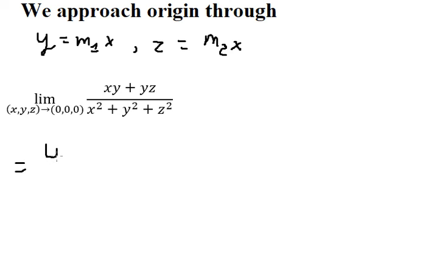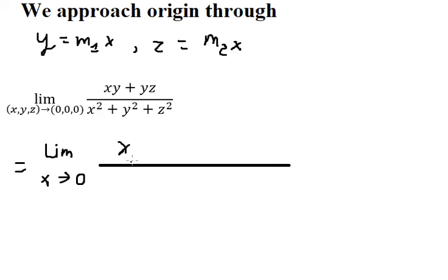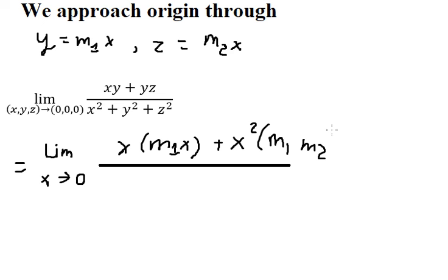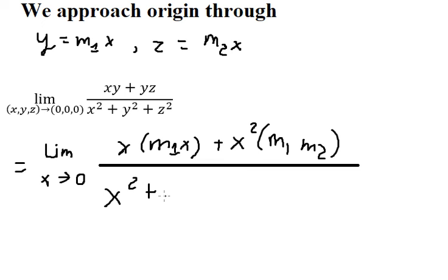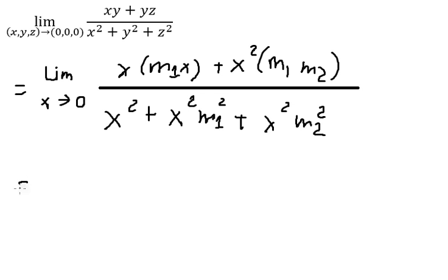We have y equal to m₁·s, and y times z equal to s²·m₁·m₂. We keep one part the same, and the other part becomes s²·m₁² plus s²·m₂². Now we need to simplify — cancel s² on the numerator and denominator — so we get a simplified expression like this.